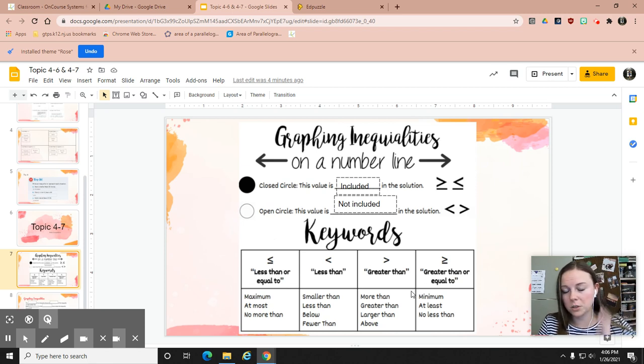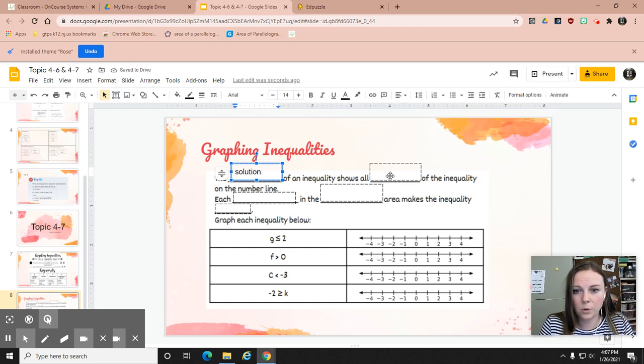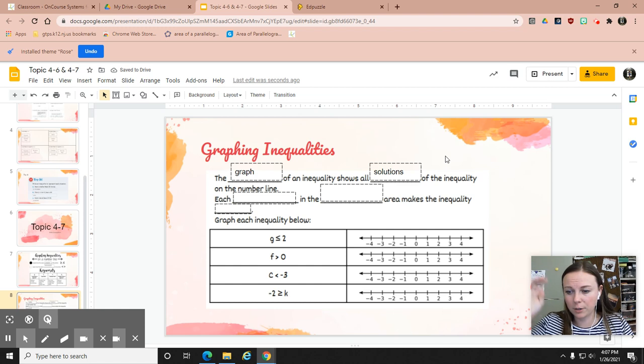This chart down here is already filled out, similar to what we did yesterday, just some keywords we'll see as we talk about inequalities. We're going to fill in the blanks here. The graph of an inequality shows all solutions of an inequality on the number line. So when I say graph, we're not talking about like a coordinate grid. We're talking about graphing on just one number line, one straight number line.